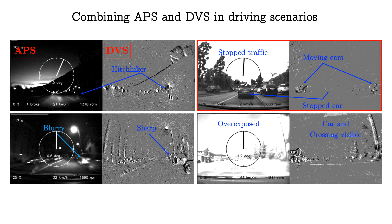These slides show four examples of how the APS and DVS streams complement each other. The top left pair shows that while the APS cannot capture a hitchhiker when underexposed, the DVS stream clearly captures the person. For the top right pair, a stopped car is invisible in the DVS frame, but cars in other lanes pop out in the DVS frame because of their motion. The bottom left pair shows that when the APS sensor is motion blurred, the quicker response of the DVS provides sharper images. The bottom right pair gives an example where the APS image is overexposed because of sunlight, while the high dynamic range property of the DVS can still capture most details of the scene.